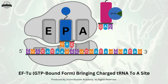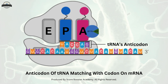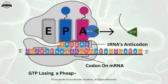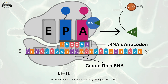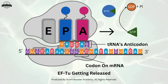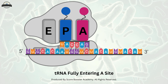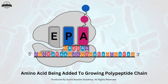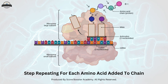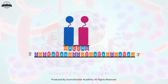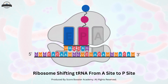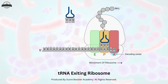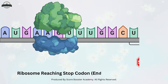In prokaryotes, the elongation factor EF-Tu, in its GTP-bound form, brings the charged tRNA to the A-site. If the anticodon of the tRNA matches the codon on the mRNA, the GTP is hydrolyzed — losing a phosphate group, turning into GDP — and EF-Tu is released. This release allows the tRNA to fully enter the A-site, ensuring the correct amino acid is added to the growing polypeptide chain. The ribosome then moves along the mRNA, shifting the tRNA from the A-site to the P-site and then to the E-site, where it exits. This process continues until the ribosome reaches a stop codon, signaling the end of protein synthesis.